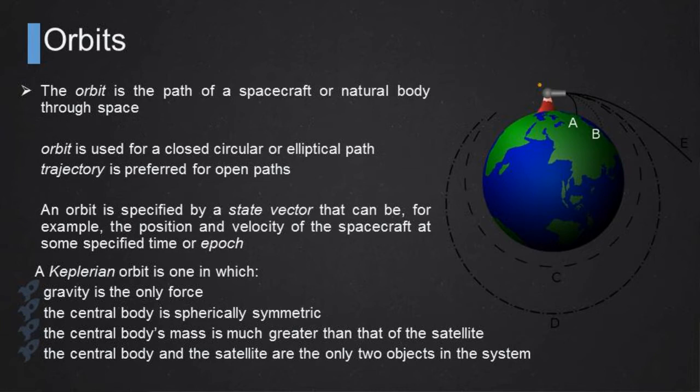In particular, we can start considering Keplerian orbits. Keplerian orbits is a definition of orbits for which some assumptions are valid. First of all, gravity is the only force acting on the object. The second is that the central body is spherically symmetric so that it can be assumed to be a point mass. The central body mass is much greater than the one of the satellite, so the satellite mass can be neglected. And last but not least, the central body and the satellite are the only two objects in the system. This is a closed system with only two objects in it.